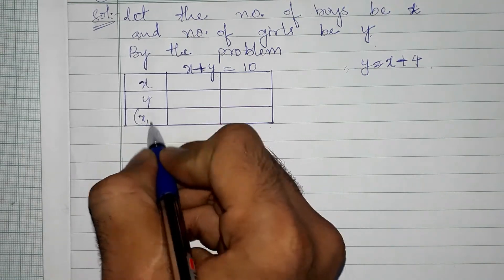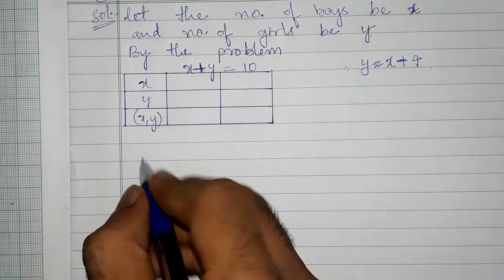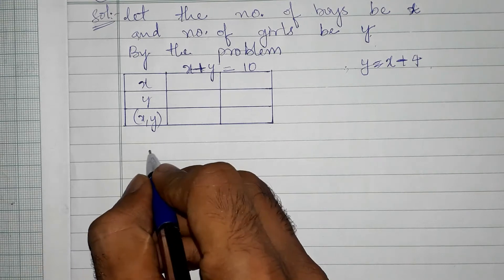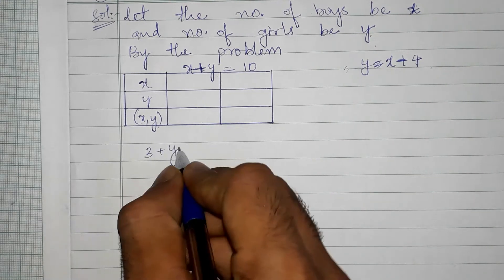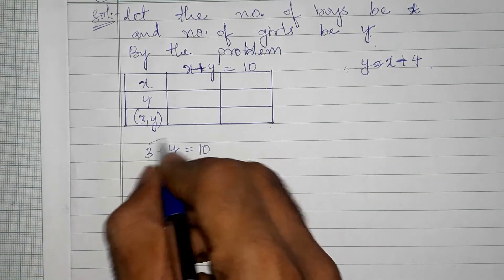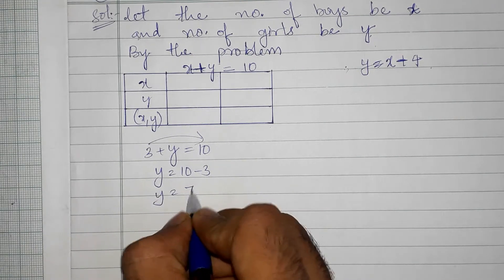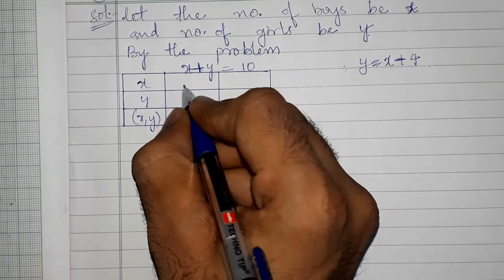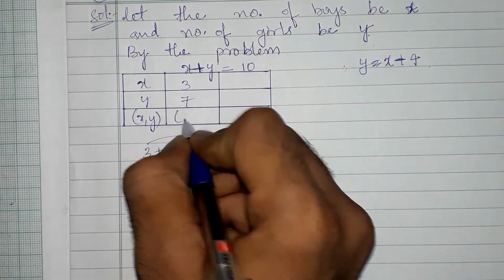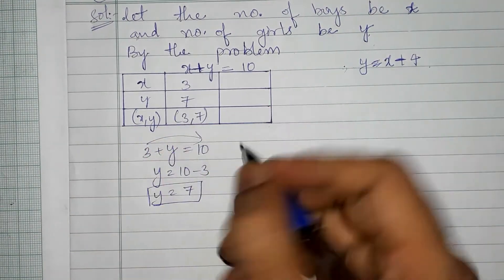So if we are taking any number like 3 in place of x, if I am substituting 3, so what I will get? 3 goes to that side, y is equals to 10 minus 3, y is equals to 7. So here 3 comma 7.